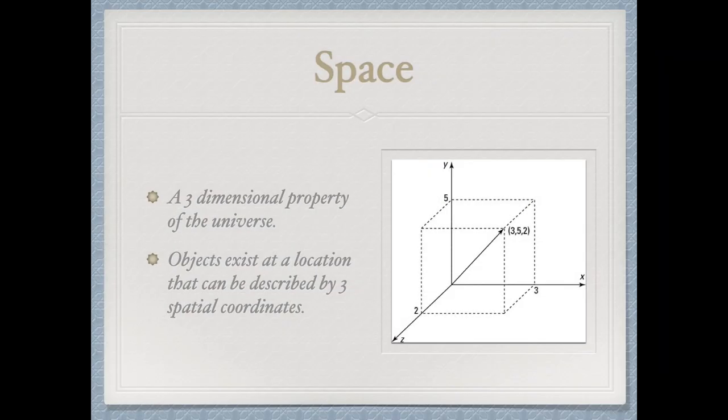As we move forward, we need to look at the geometry of space. Space is a three-dimensional thing — we can define any location by three coordinates: forward/backward, left/right, and up/down. Those three coordinates give us a three-dimensional universe. But if you're thinking there are actually four dimensions, that's because there are — the fourth dimension is time.